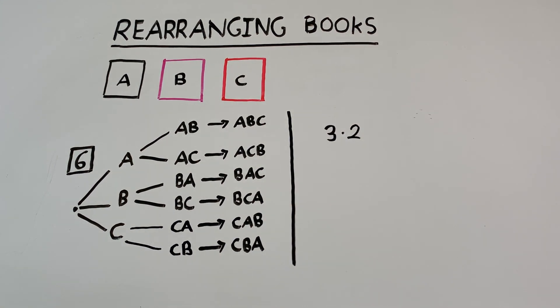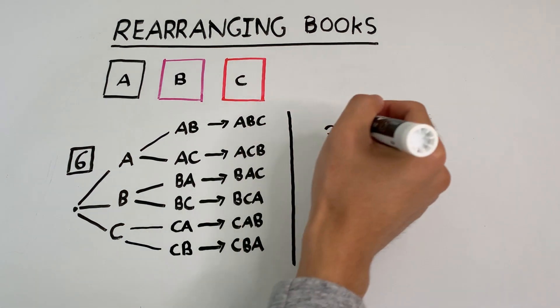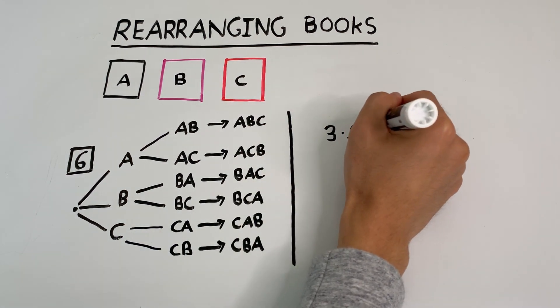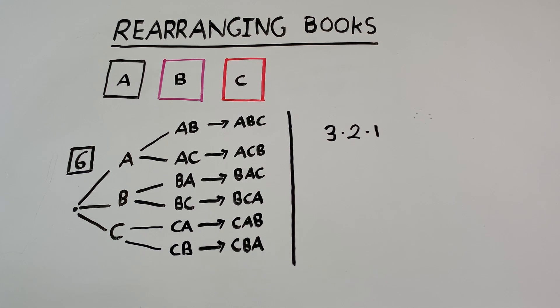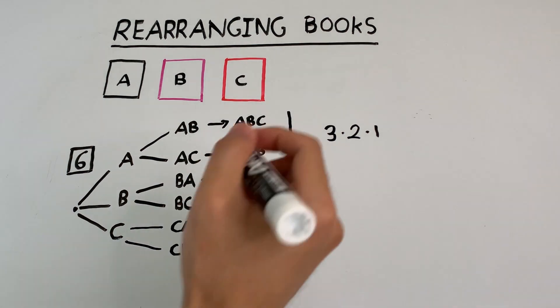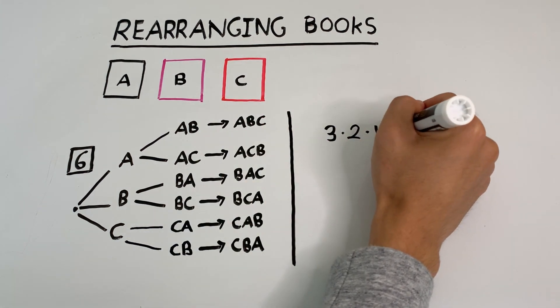And finally, once two books are placed, then there's only one remaining book. So there's only one choice for that. And we see that three times two times one also gives six.